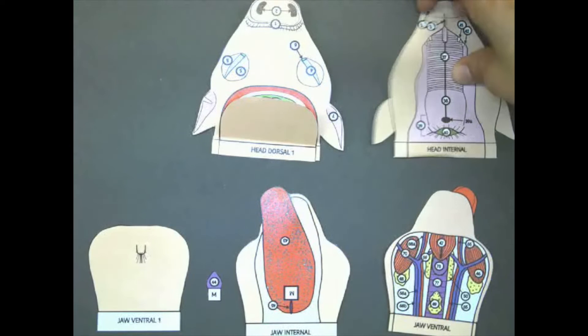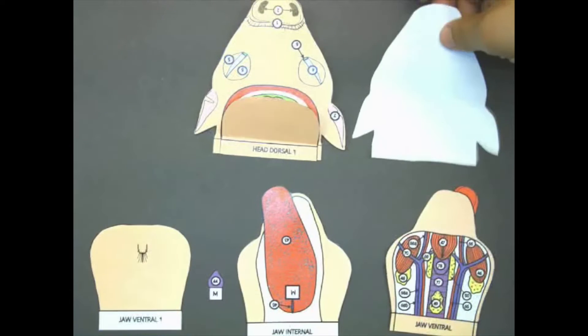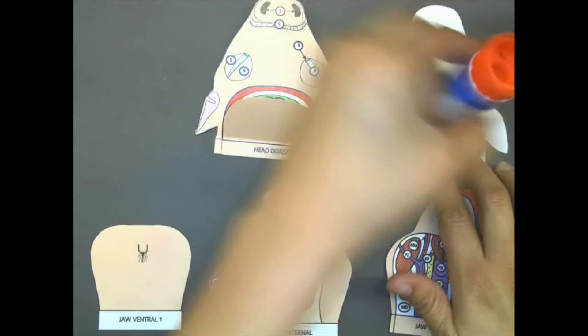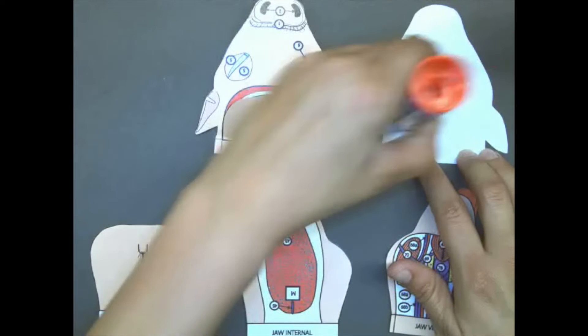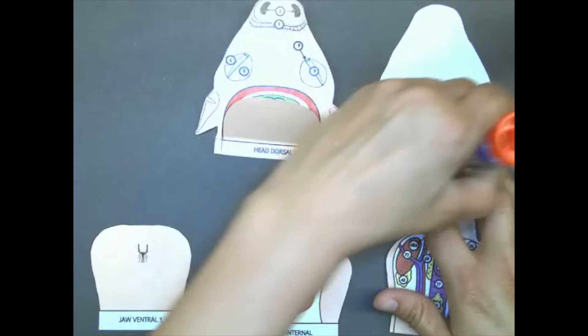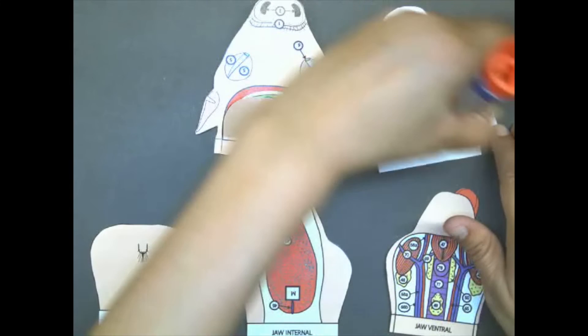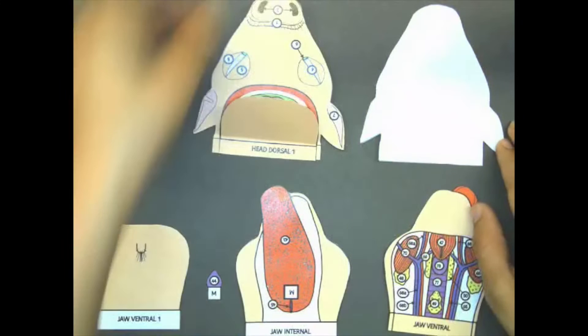With your remaining piece turn it over to a blank white side and apply glue. Now that you applied glue, attach the head dorsal piece, the one we first worked on, to this blank white piece.